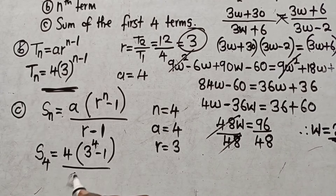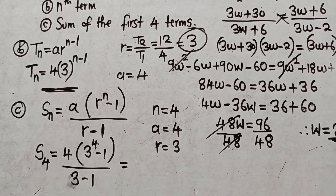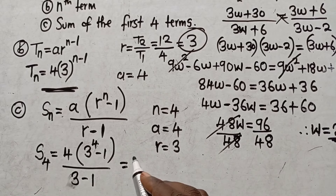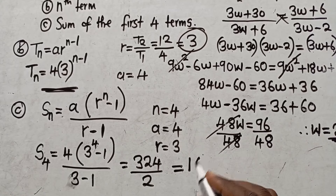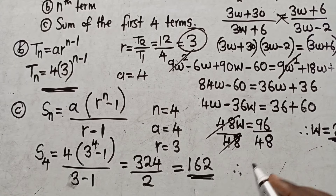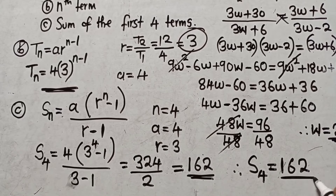3 to the power 4 is 81. So we have 4 times (81 minus 1) divided by 2, which is 4 times 80 divided by 2, giving 320 divided by 2, which equals 160. Wait — 81 times 4 gives 324, divided by 2 gives 162. Therefore, the sum of the first four terms is 162.